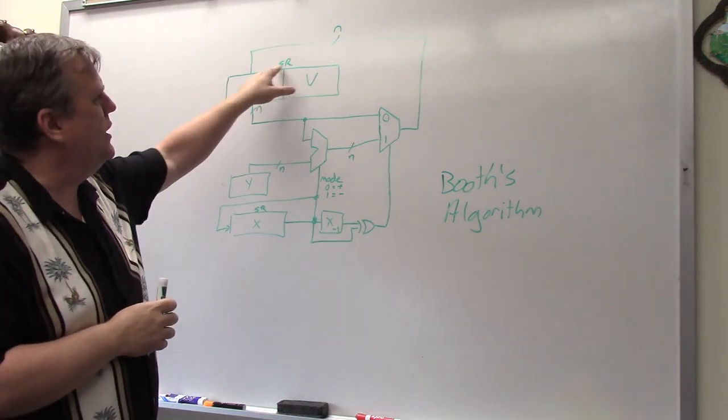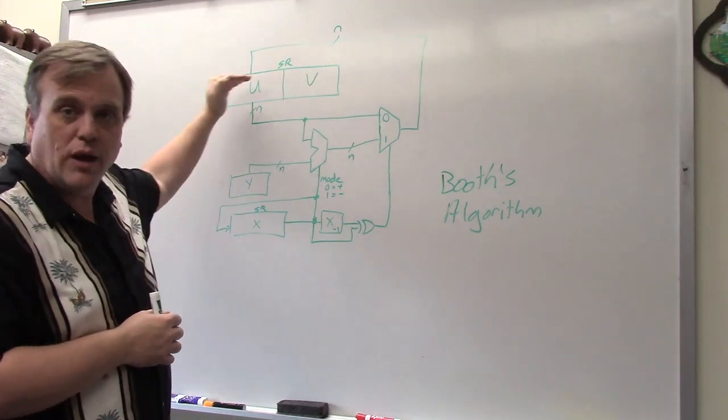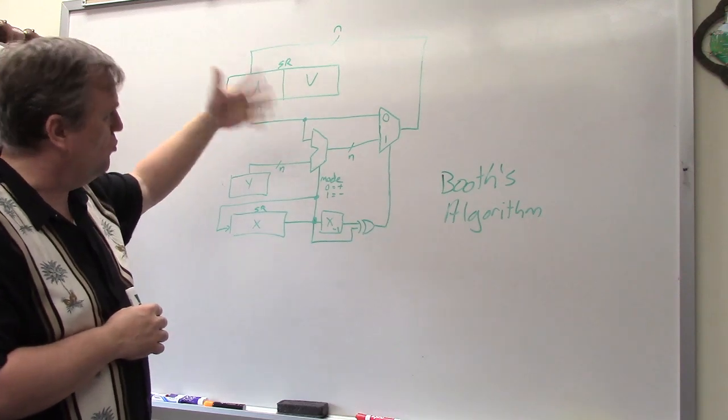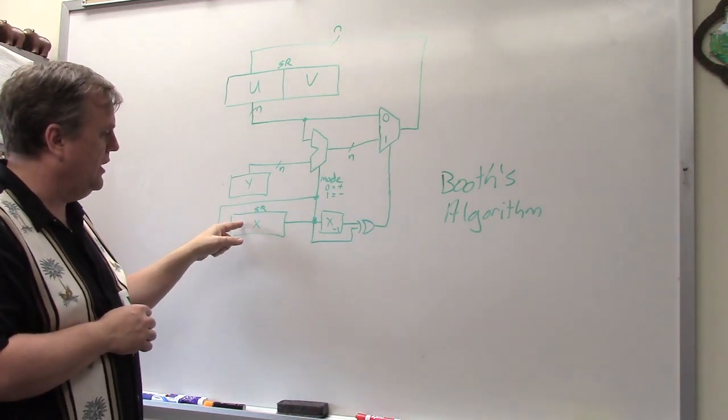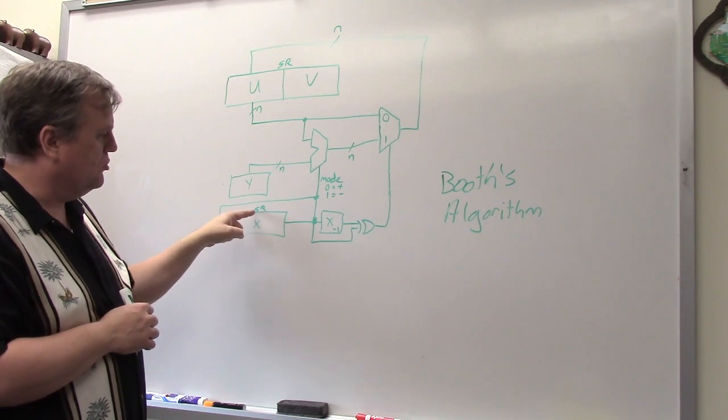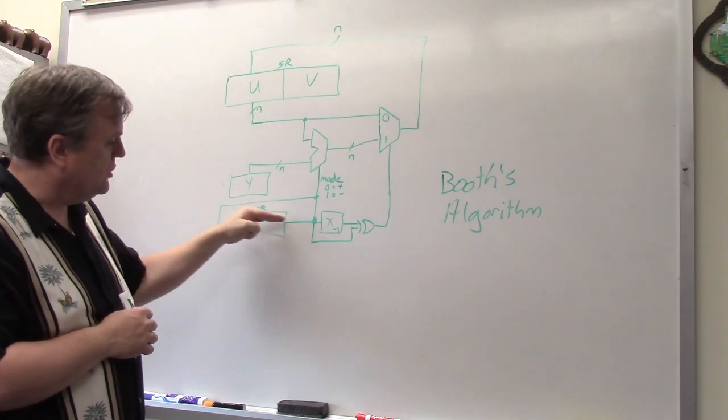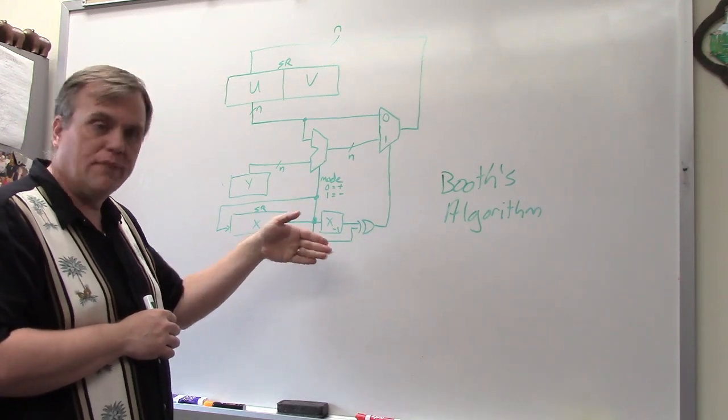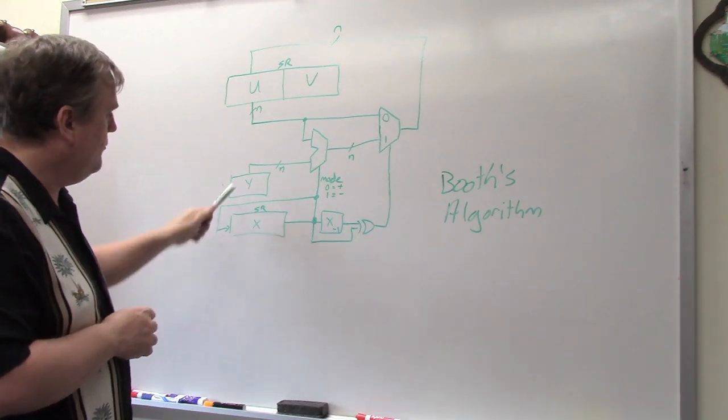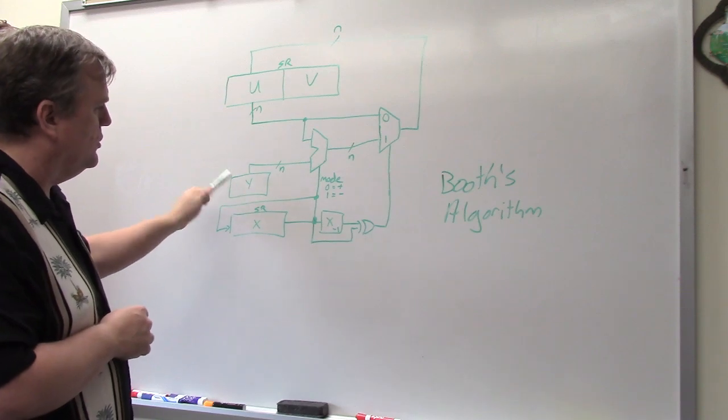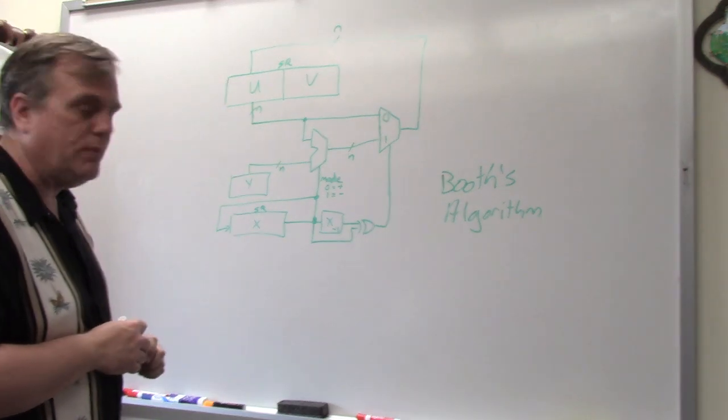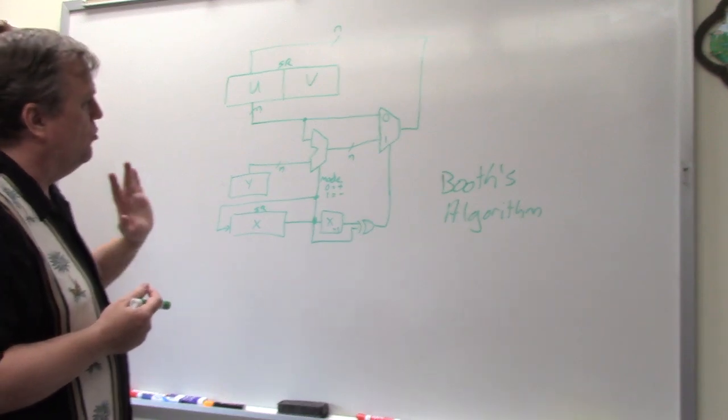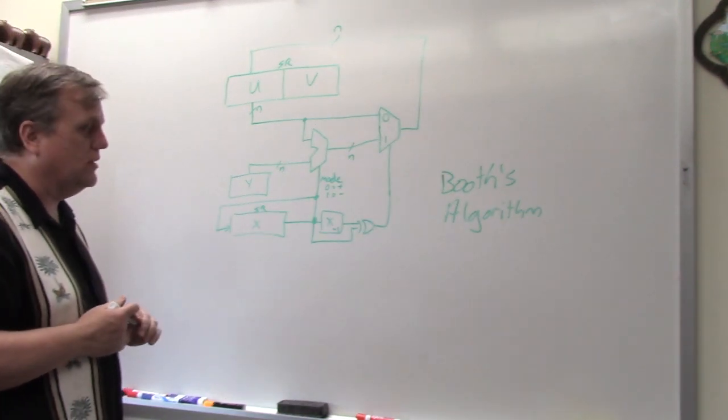We've got UV I've denoted as SR for shift register because we have to do that shifting in every cycle. We have to shift to the right when it goes on. Similarly, X also is denoted as a shift register because it also has to shift to the right. I have a single flip flop for X to the minus one because we have to hold that. Y is not being denoted as anything special. I just need to be able to do a parallel read out of it because I'm going to either add or subtract it. The rest of everything that goes on here depends on what's going on.